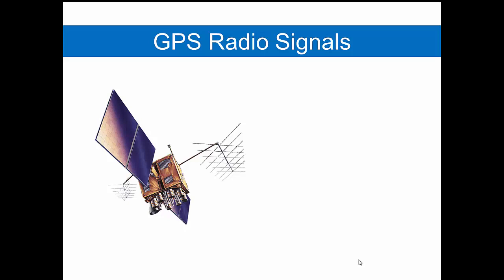GPS, as we said in the previous video, measures distance using radio signals. Those signals have to travel from the satellite to your receiver. The satellite is a transmitter and your GPS unit on the ground is a GPS receiver.